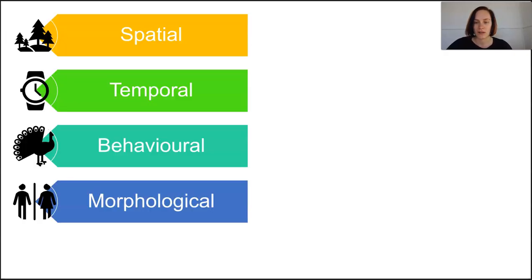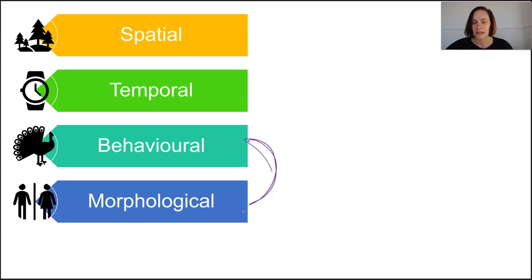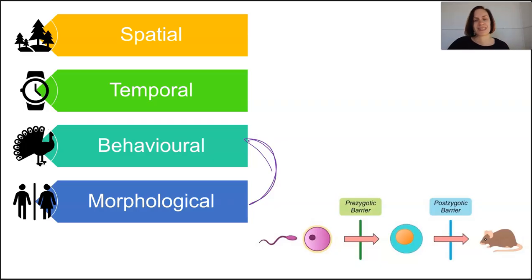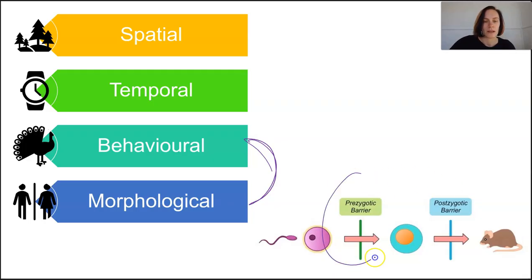There are lots of ways these mechanisms of isolation can be classified — they all influence how gene flow occurs across the population. Based on the syllabus, our focus is on those that are geographic, temporal, and reproductive, which exist in both behavioural and morphological forms. Another way of grouping these mechanisms is to consider when isolation occurs in relation to reproduction. Mechanisms can be prezygotic — occurring before reproduction actually happens, preventing fertilisation — or postzygotic, occurring after reproduction has already taken place, where the gamete or zygote dies off or the hybrid offspring produced is sterile. All the mechanisms we're looking at are prezygotic.